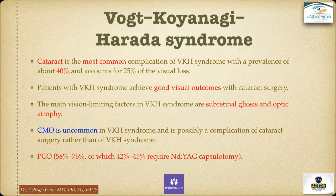The fourth is Vogt-Koyanagi-Harada syndrome. Cataract is the most common complication, with a prevalence of about 40%, accounting for 25% of visual loss — different from Behcet disease. Patients achieve good visual outcomes with cataract surgery. The main vision-threatening complications are sub-retinal gliosis and optic atrophy. Cystoid macular edema is uncommon, possibly a complication of cataract surgery rather than the syndrome itself. Posterior capsular opacification is highly common, occurring in 58–76%, of which 42–45% require YAG laser capsulotomy.